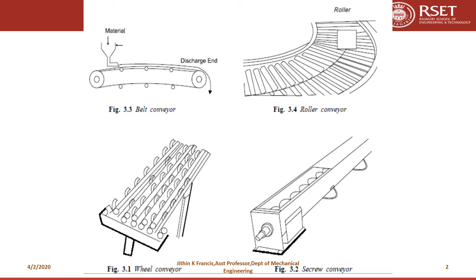In a roller conveyor, instead of a belt, we use rollers to move the material. If we take the wheel conveyor, there are small wheels which will keep on rotating and the material moves. In a screw conveyor, there is a screw which rotates and some kind of powder form of material will be loaded and it can be transported to different areas.